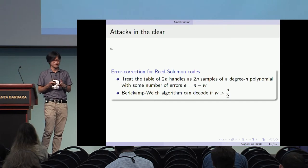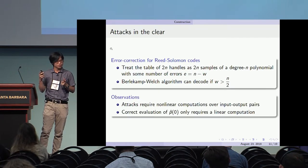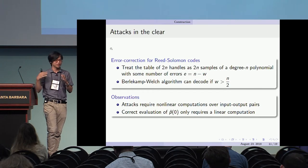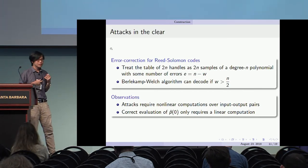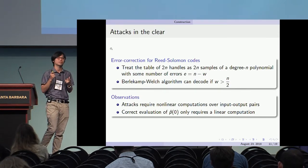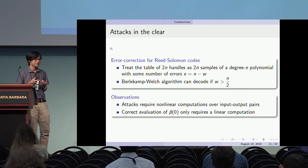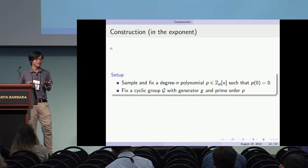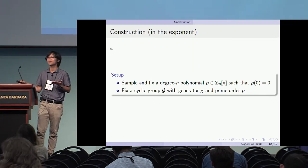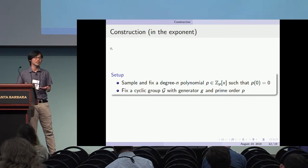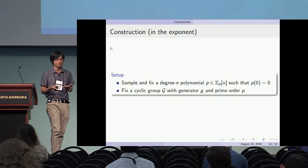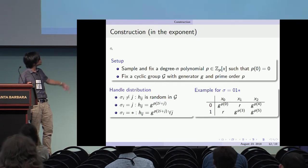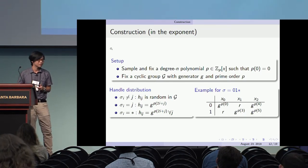The Berlekamp-Welch algorithm requires a nonlinear computation because you're multiplying the interpolating polynomial by other algebraic terms. However, if you just want to compute the value of the interpolating polynomial at 0, this only requires a linear combination over the elements. With this realization, we can put everything in the exponent: sample the same degree-n polynomial in the same way, but fix a cyclic group of the same prime order as the modulus of the integer ring. The handles are given the same way — just everything is put in the exponent of the same generator element.